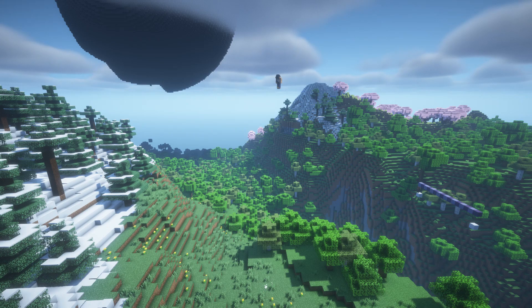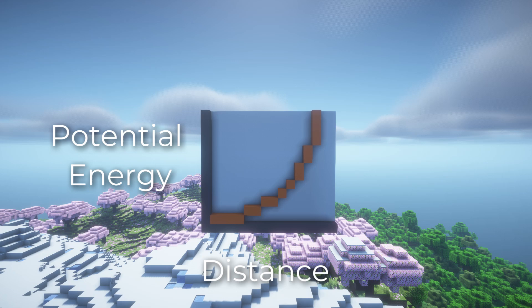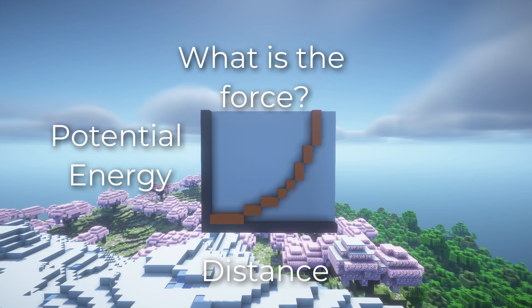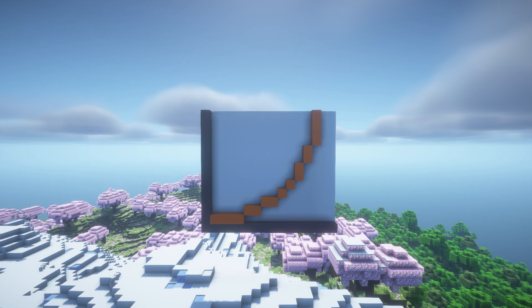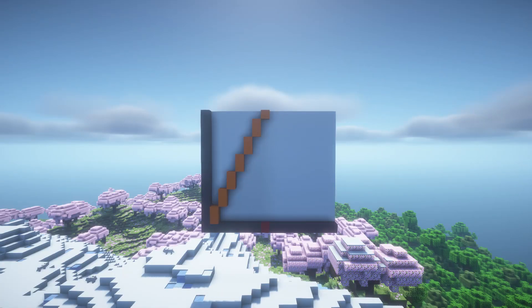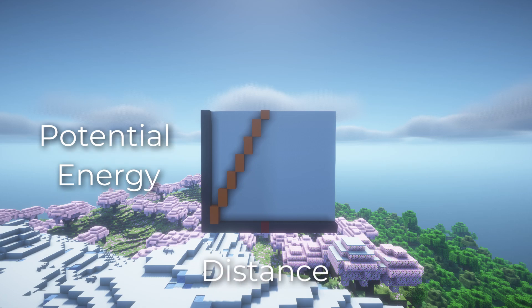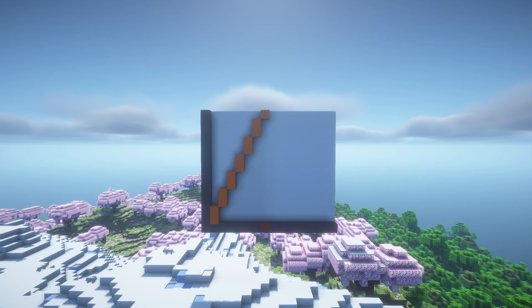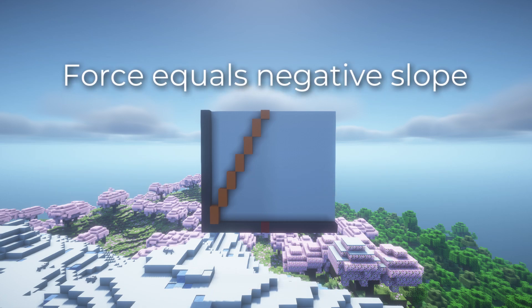So why is this important? A common graph you will encounter is a potential energy vs. distance graph, in which you may be asked what the force on an object at a certain point is. Since potential energy is the integral of force, we can deduce that force is the derivative of potential energy — more specifically, F equals negative dU/dx, where x is distance and U is potential energy. Looking at a similar graph with the y-axis as potential energy, the force at any point will be negative 2 newtons since the slope at any point is 2. So the force will always be the negative slope of the potential energy vs. distance graph.